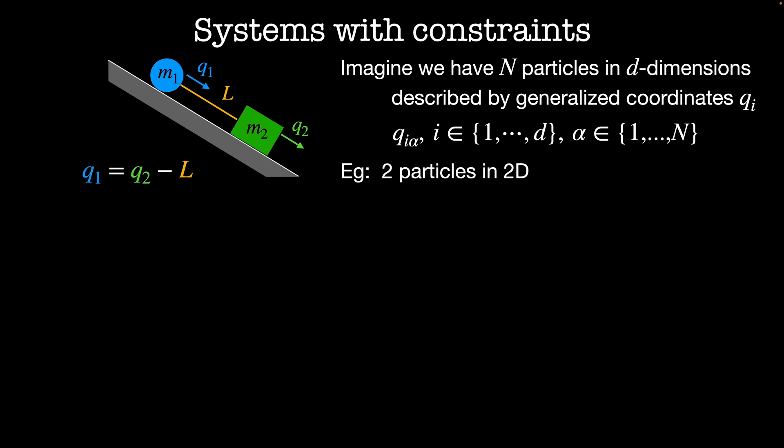For example consider a system with two particles in two dimensions. Our Lagrangian in Euclidean coordinates is a function of x1 and y1 which are the positions of the first particle, x2 and y2 which are the positions of the second particle, their velocities in Euclidean space and time. Instead of Euclidean coordinates we might find that other coordinates are better like the q1 and q2 coordinates in the inclined plane.